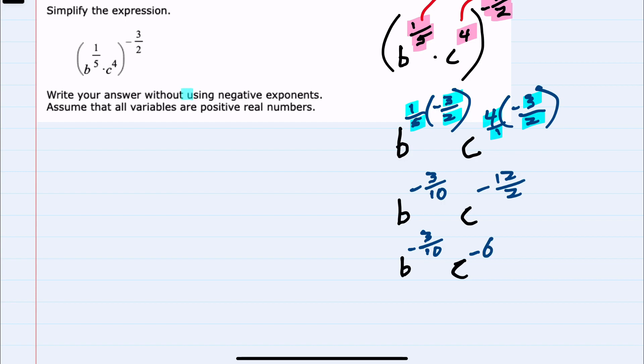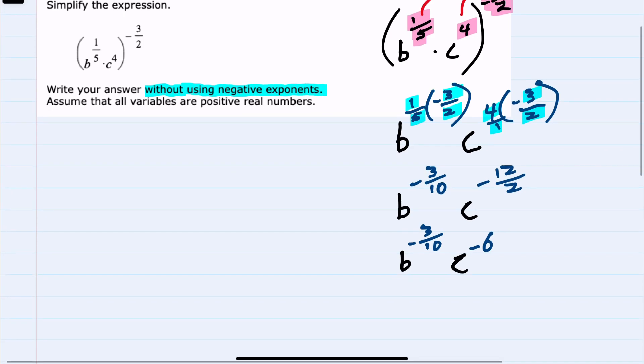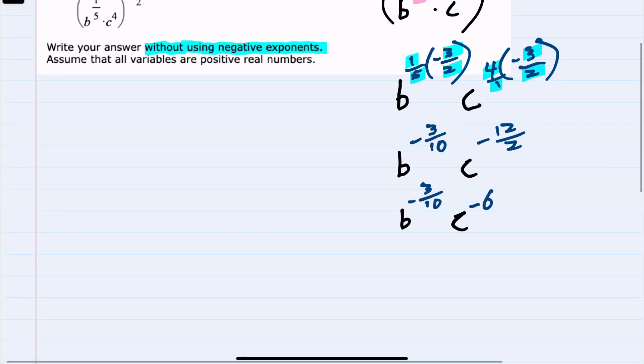And then we note that we're supposed to write our solution without using negative exponents. So to write this expression without negative exponents, I would need to move both of these variables to the denominator, leaving just a one in the numerator.